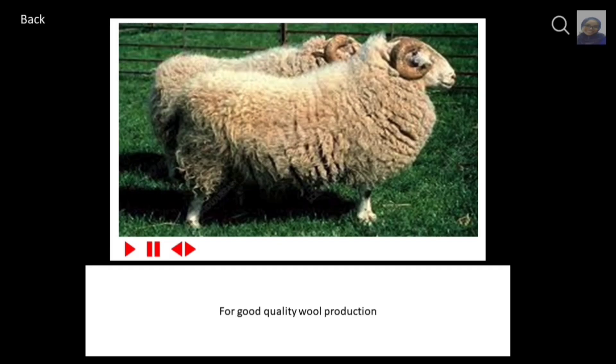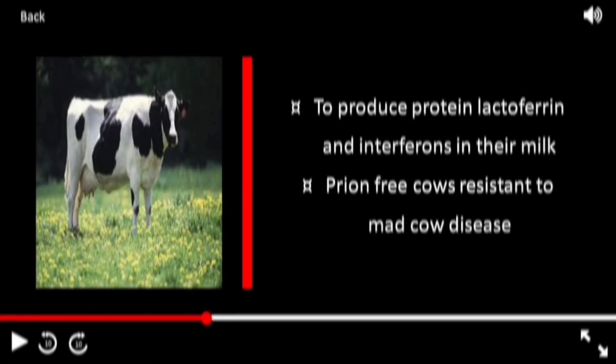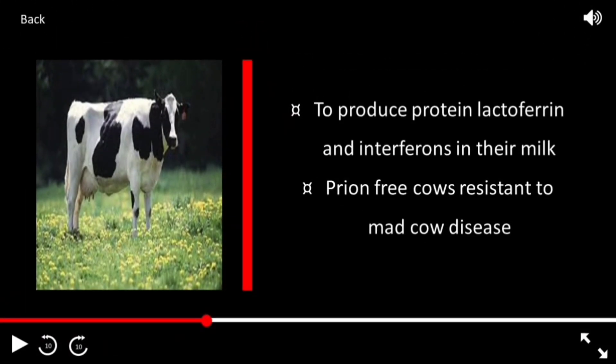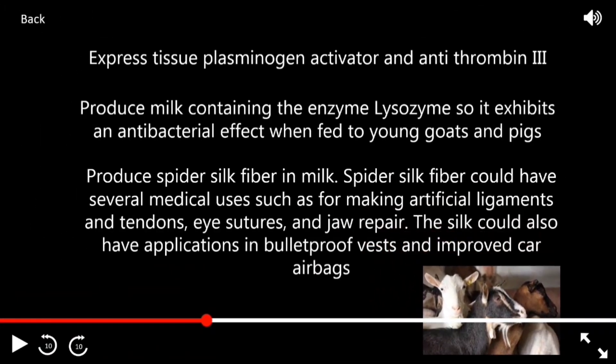The basic example is sheep, used for good quality wool production. Next is cattle, made to produce proteins like lactoferrin and interferons in their milk. They are also prion-free cows, making them resistant to mad cow disease. Finally, we have goats. The transgenic goat can express tissue plasminogen activator and anti-thrombin III.